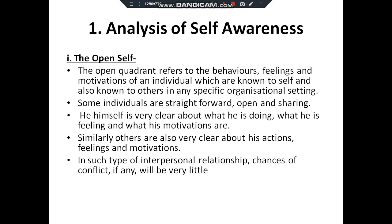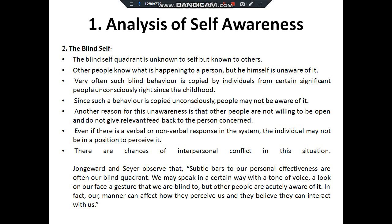The first part is open self. The open quadrant refers to the behavior, feeling, and motivation of an individual which are known to self and also known to others in specific organizational settings. Some individuals are straightforward and open and share everything with one another. He himself is very clear about what he is doing, what he is feeling, and what his motivations are. Similarly, others are also very clear about his actions, feelings, and motivations. In such interpersonal relationships, chances of conflict will be very little. According to Joseph and Ingham, the greater the first quadrant, the better the person will be in coordinating and communicating with others.